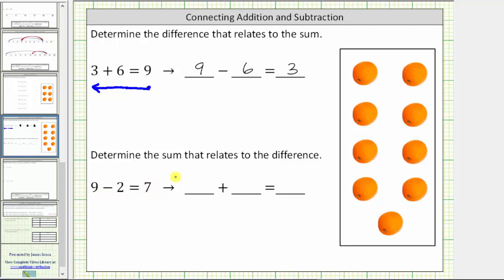If we model this difference using the nine oranges, because we are subtracting two, we would now remove two oranges, leaving us with seven, which is the difference.